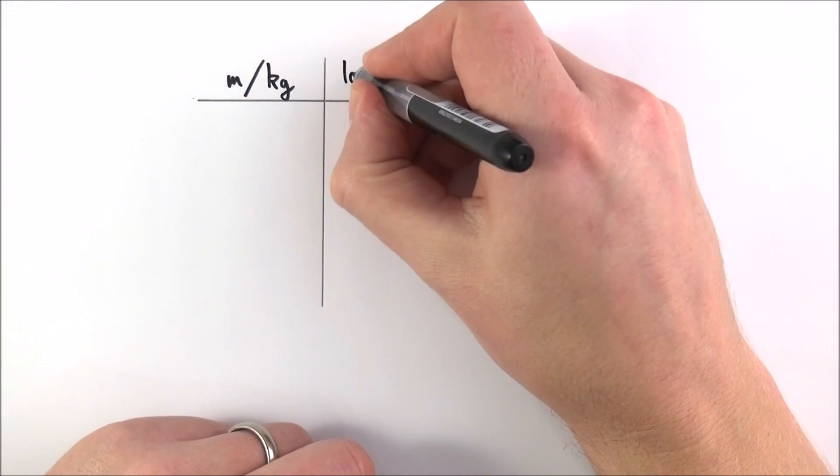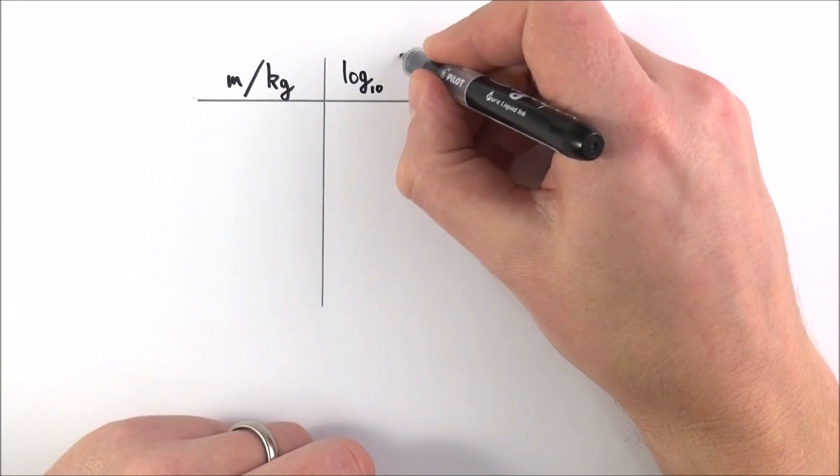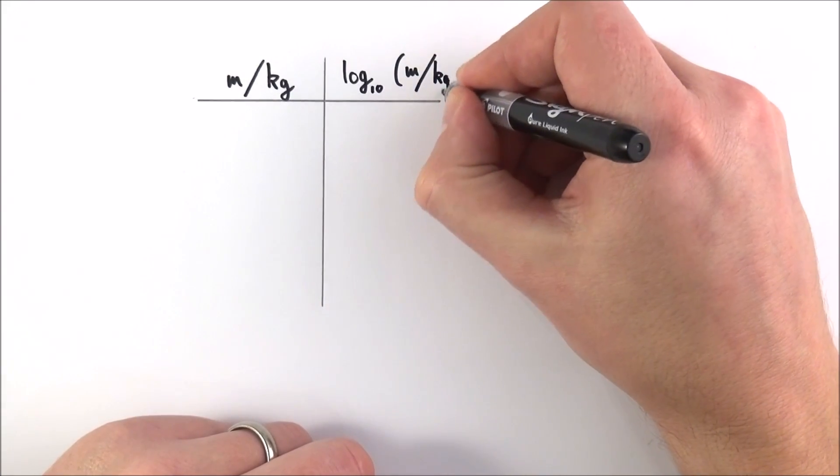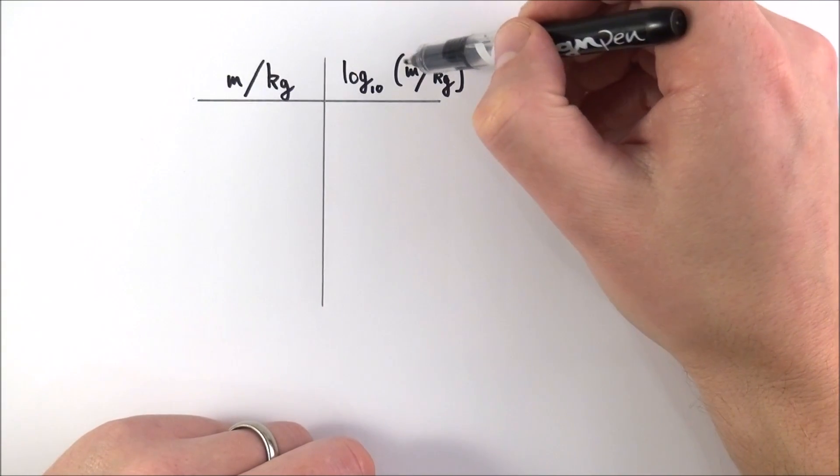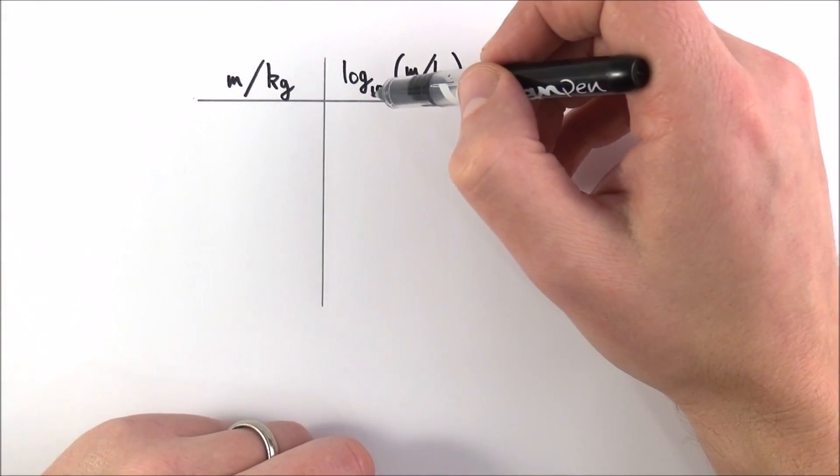If we think about log to the base 10, we're going to take the log of mass measured in kilograms. The important thing here is I put the mass in kilograms in brackets, because this is what I'm taking the logarithmic value of.